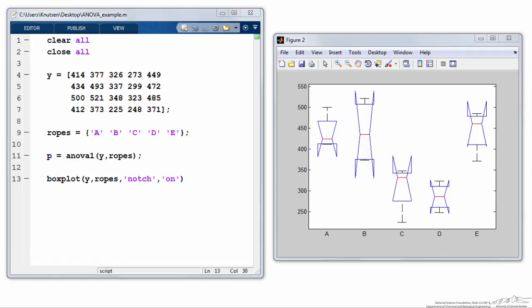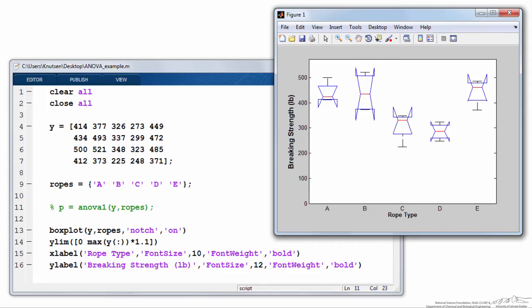So what we really want to do is include axis labels and set the y-axis limit to zero, so we can get a more fair visual comparison of the breaking strength of the ropes. To make that happen, I've used the ylimit command. I set the lower limit at zero and the upper limit 10% higher than the maximum value. I also included the x label and y label, along with some font size, and I made it bold to make it easier to read.